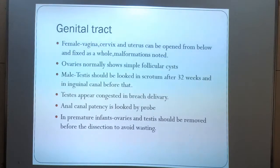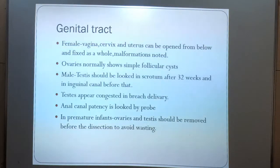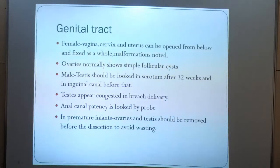The genital tract — in the female, the vagina, cervix, and uterus can be opened from below and fixed as a whole, and malformations are noted. In the male, testes should be looked for in the scrotum after 32 weeks and in the inguinal canal before that. Anal patency is checked by probe.